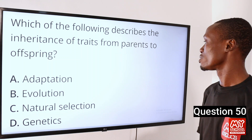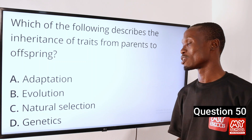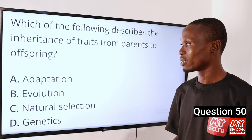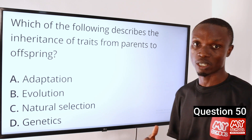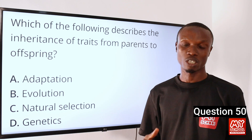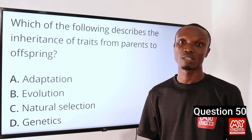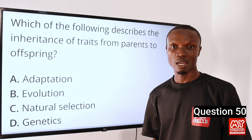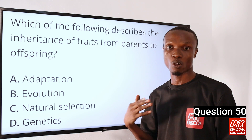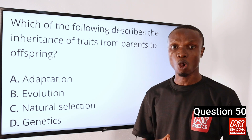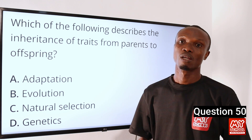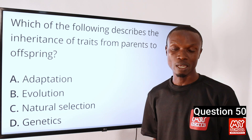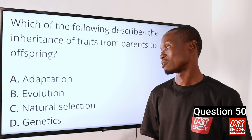Question 50. Which of the following describes the inheritance of traits from parent to offspring? A. Adaptation. B. Evolution. C. Natural Selection. D. Genetics. Genetics is the field of biology that studies the inheritance of traits from parents to offspring. It encompasses various concepts and principles including the study of genes, DNA, chromosomes, and so on. So option D is the correct option.